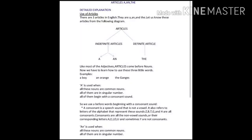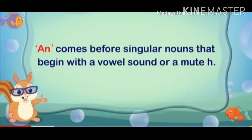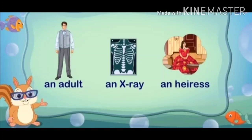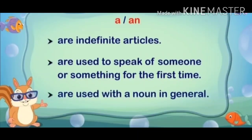Consonants are all the non-vowel sounds or their corresponding letters. A, E, I, O, U, and sometimes Y are not consonants. Now students, AN comes before singular nouns that begin with a vowel sound or a mute H. Let us take some examples: an adult, an x-ray, an heiress. A or AN are indefinite articles. A or AN are used to speak of someone or something for the first time, and also used with a noun in general.